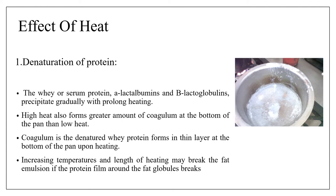Increasing temperature and length of heating may break the fat emulsion if the protein film around the fat globules breaks. When you heat the milk, you can see a layer on top — that is a fat layer along with a thin film of protein. So this is not only fat but also a thin layer of protein. The main effect of heat on protein is that it starts to form coagulum at the bottom of the pan.